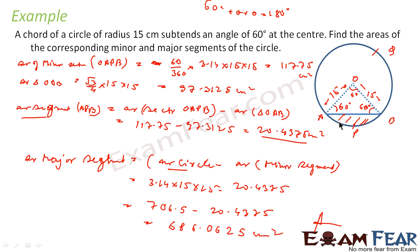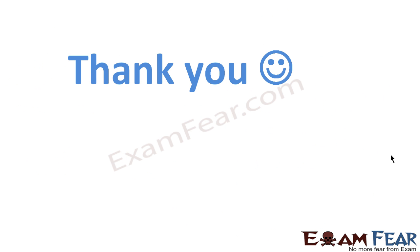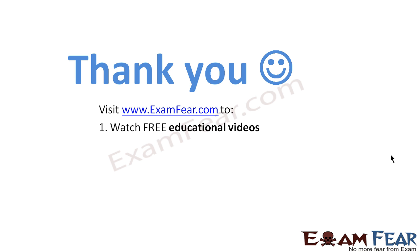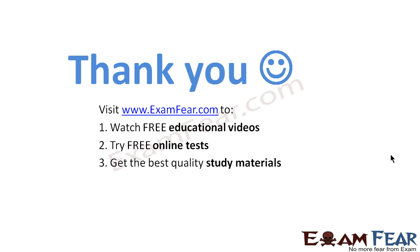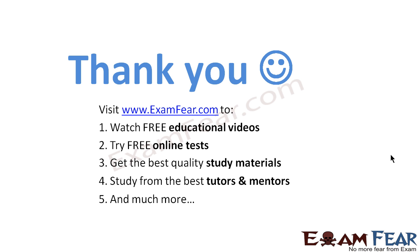The key concept here is simple: minor segment area is found in the same way as the previous example, and area of major segment equals area of the whole circle minus area of the minor segment. Visit ExamFear.com to watch free educational videos, try free online tests, get the best quality study materials, and study from the best tutors and mentors. Thanks once again.